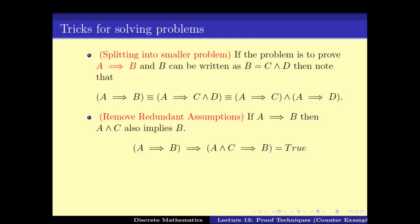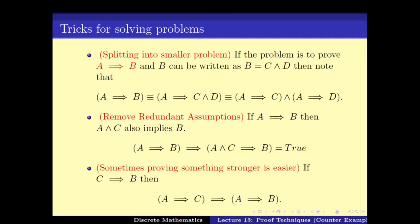In other words, one should use the most relevant set of assumptions that are necessary to prove the conclusion. That would simplify the proof and help in getting the proof easier. The third technique was that sometimes proving something stronger is easier. While we might have C implies B and need to prove A implies B, it might be easier to prove A implies C instead, which would be a harder statement in itself but might be easier to prove. So making the problem harder can actually make getting a proof easier.